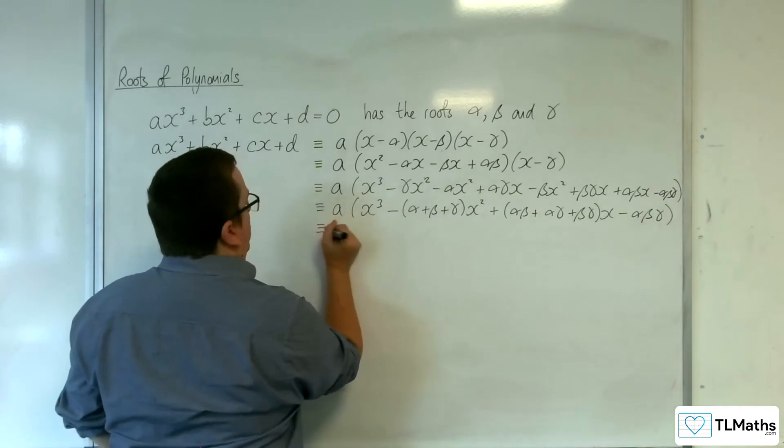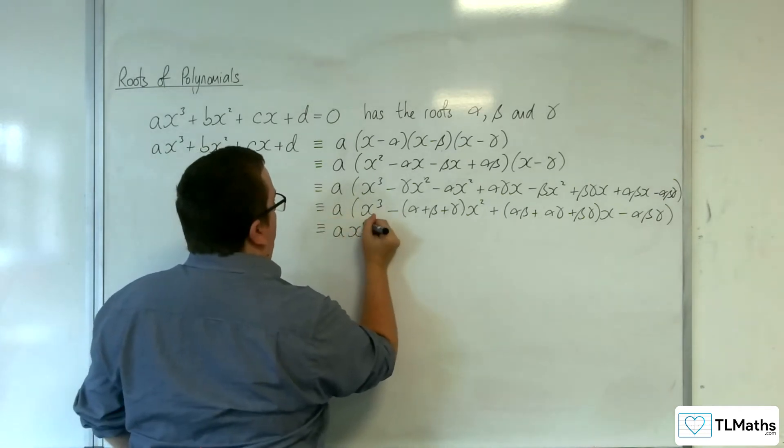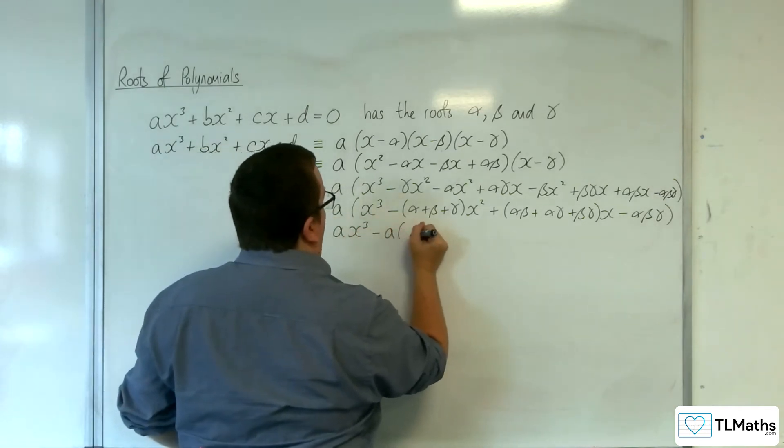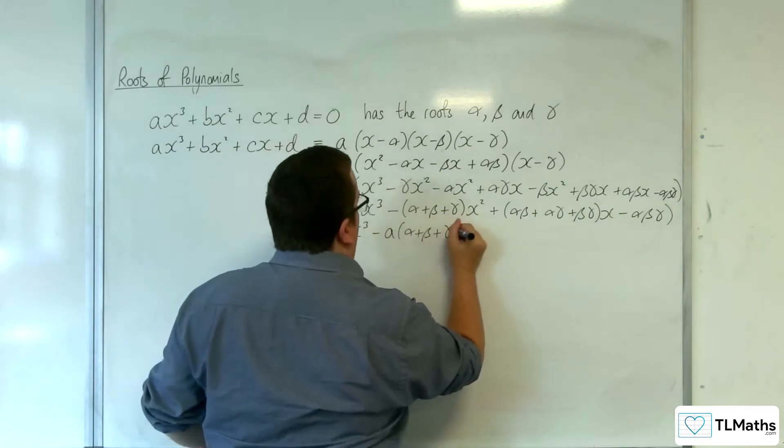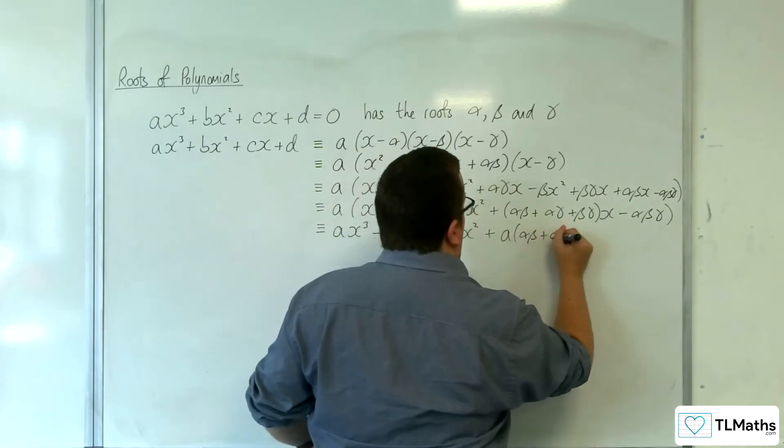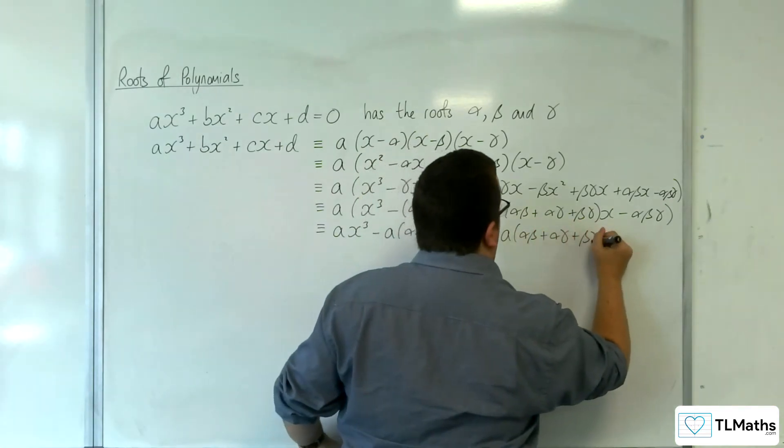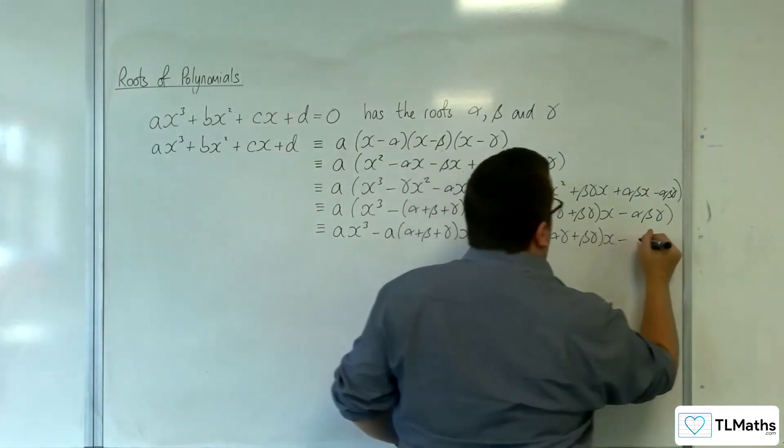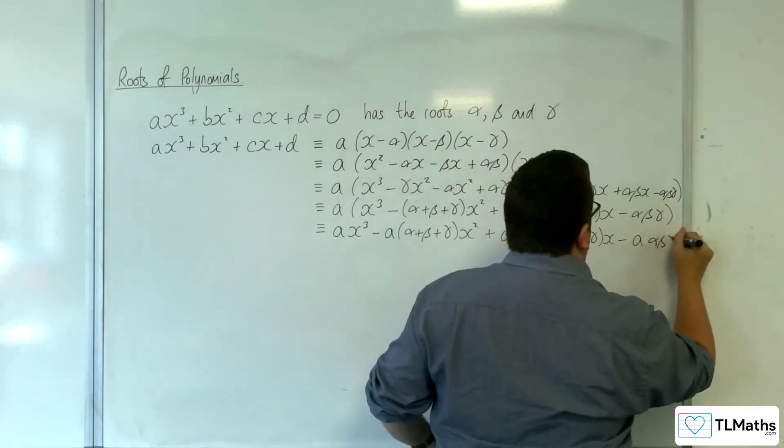Finally, multiply through by the a: ax³ - a(α + β + γ)x² + a(αβ + αγ + βγ)x - aαβγ.